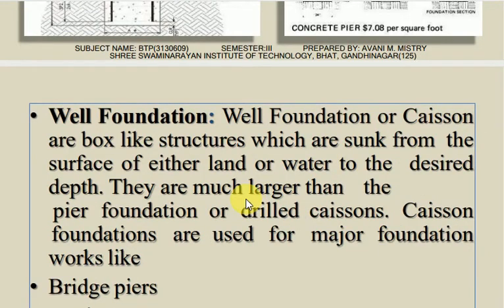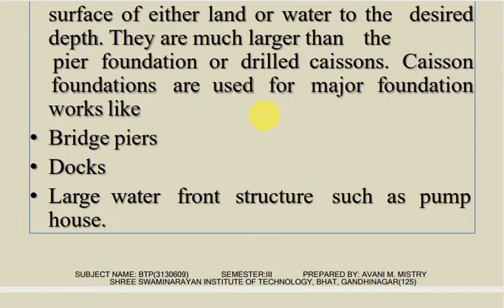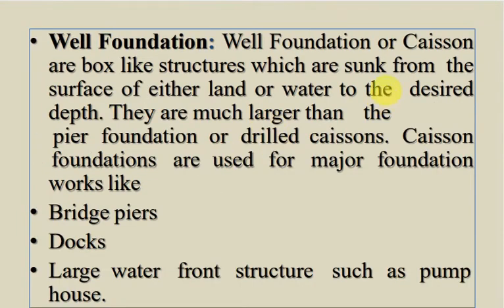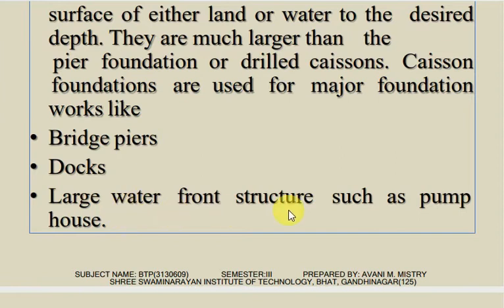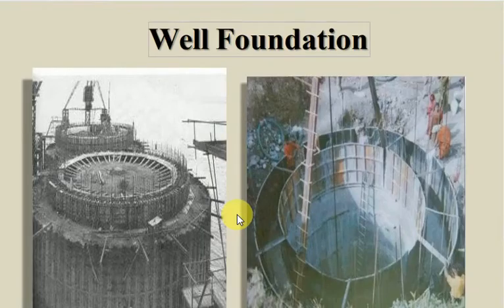Well foundation - caissons are box-like structures which are sunk from the surface of either land or water to the desired depth. They are much larger than pier foundation. Caisson foundations are used for major foundation works like bridge piers, docks, large waterfront structures such as pump houses, etc.